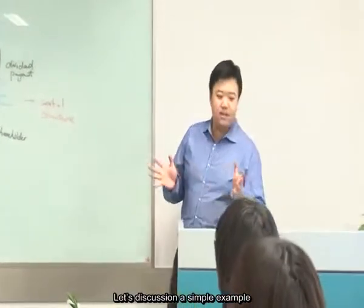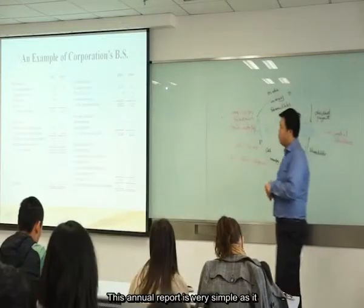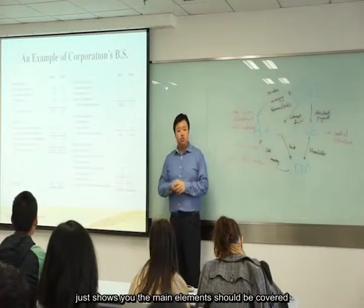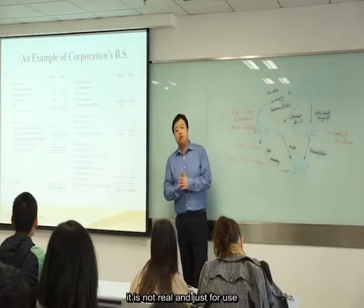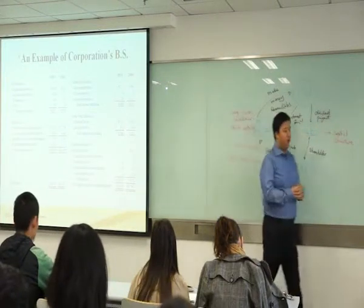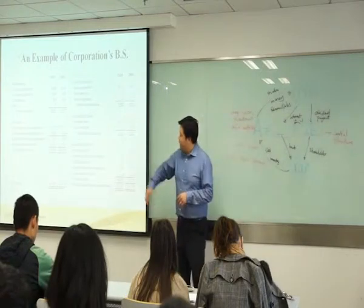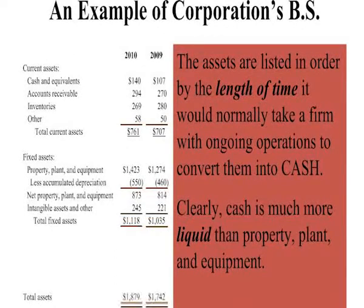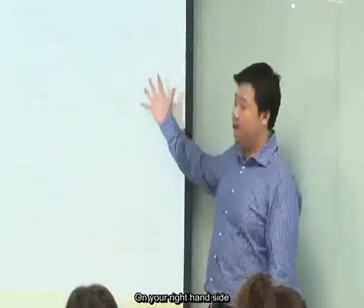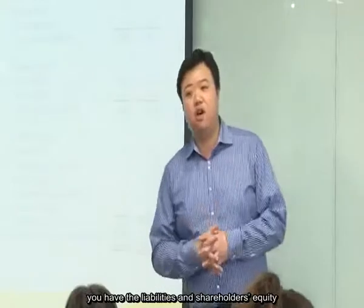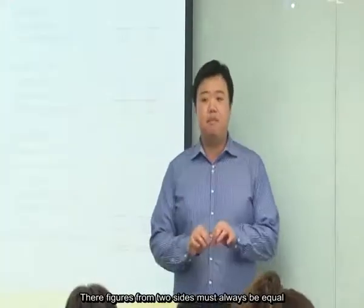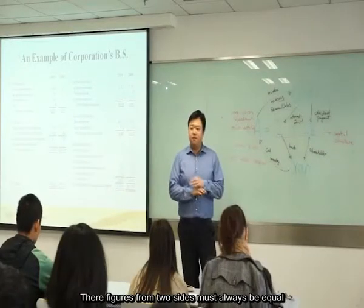The most important balance sheet identity is: assets always equal liabilities plus shareholders' equity. That's the most fundamental equation in accounting, and also in corporate finance. On the asset side, assets are listed in order of liquidity — the ease and quickness with which assets can be converted to cash. I put the most liquid asset on the first line, just below the current assets heading. As we discussed, the most liquid asset is cash.